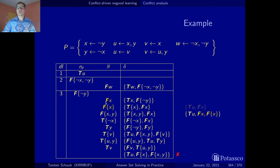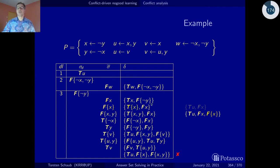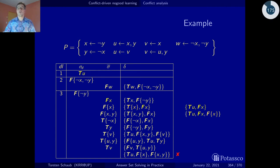So again we pick the literal that was added last to the assignment, and we resolve the current conflict no-good with the reason for this literal. We remove the complementary pair of literals and union the remaining literals to obtain a new conflict no-good.